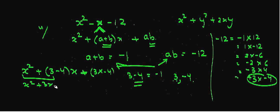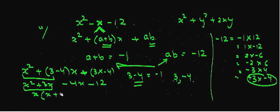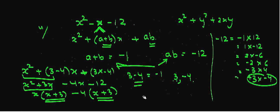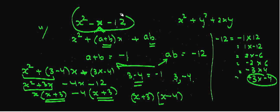We make pairs: (x² + 3x) and (-4x - 12). From the first pair, we take x as common, giving x(x + 3). From the second pair, we take -4 as common, giving -4(x + 3). Now x + 3 is the common factor. Taking it out, we get (x + 3)(x - 4). So the factors of x² - x - 12 are (x + 3) and (x - 4).